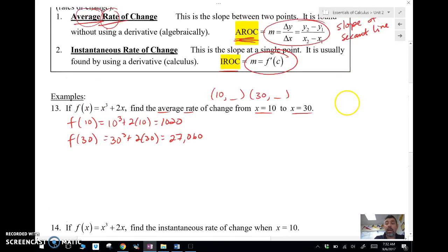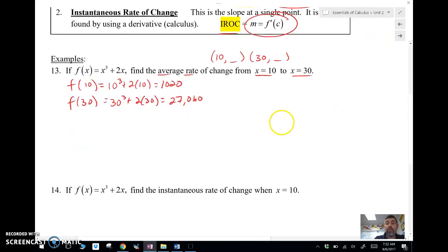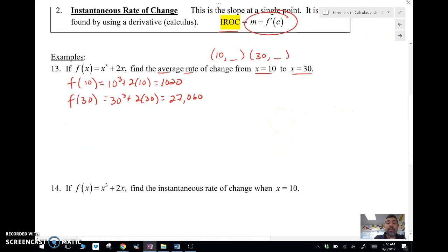So here I have y2 minus y1. Another way to write this is the average rate of change is f of b minus f of a over b minus a.